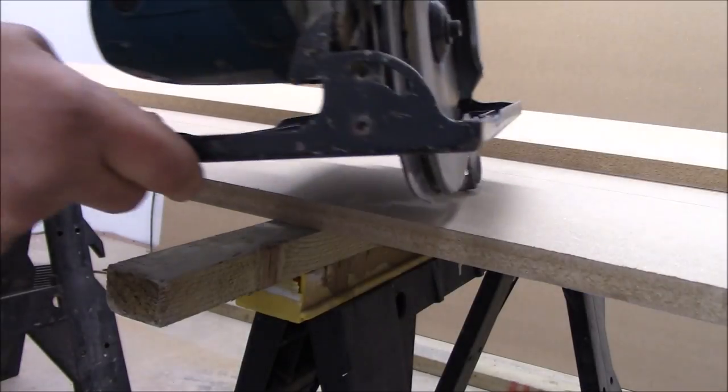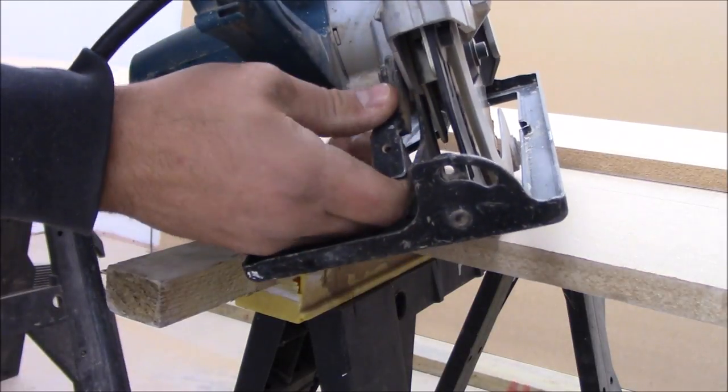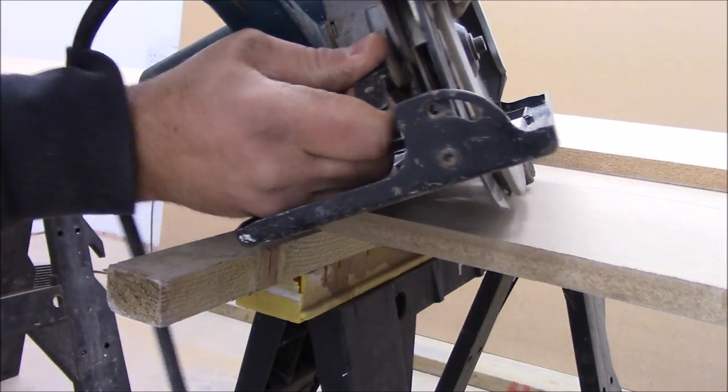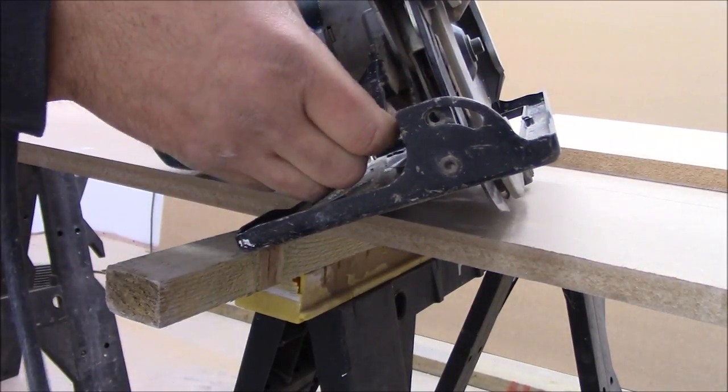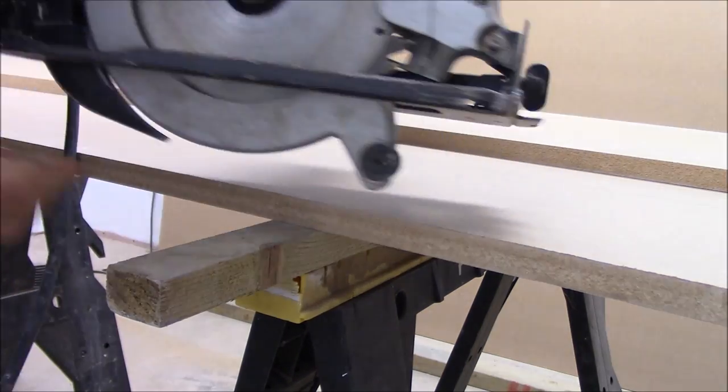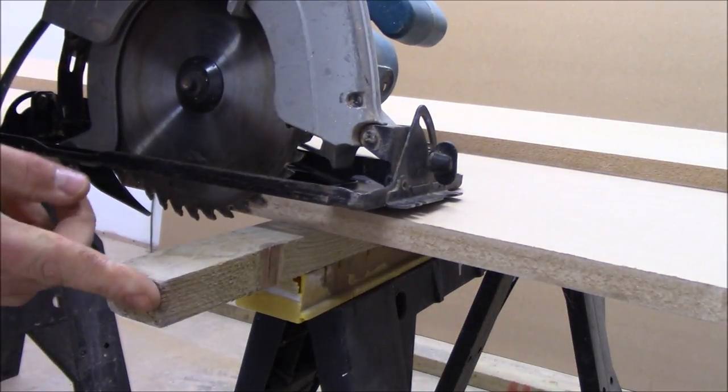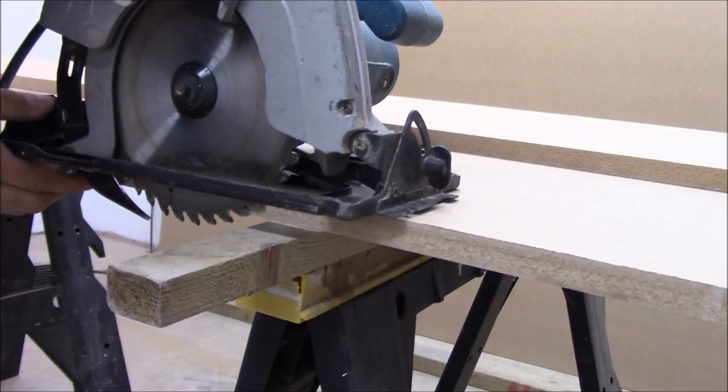So now that's my circular saw, the old model of Makita. Anyway, behind here is a handle that you increase or decrease the depth. This handle. And obviously I want to cut only the board and a bit of this wood.